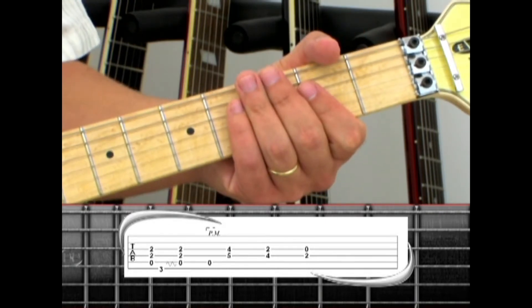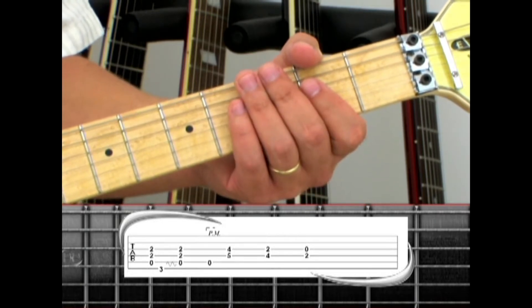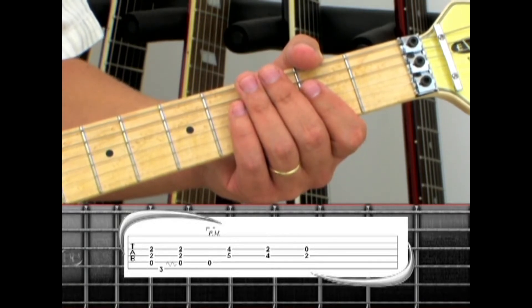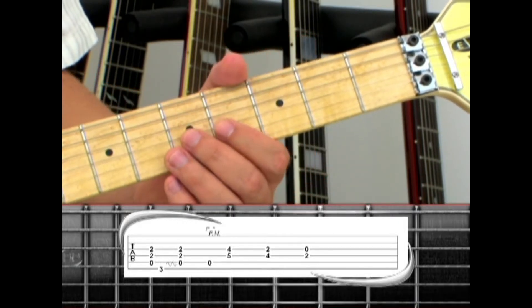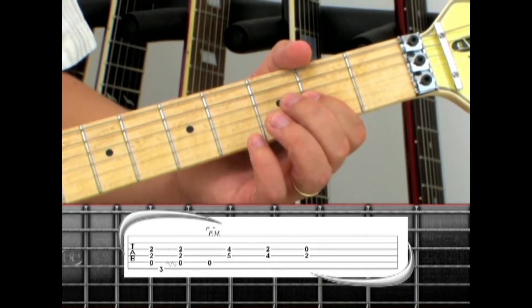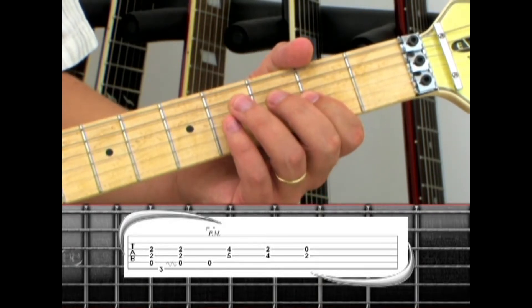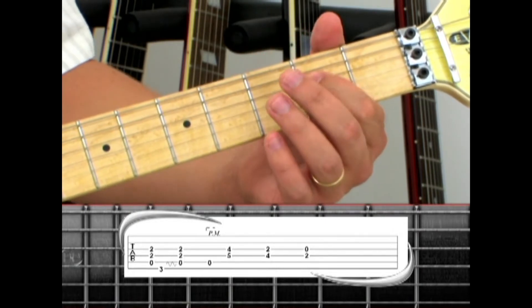Palm mute a single open 5th string A, then play a series of double notes on the 3rd and 4th string. First is the 3rd string 4 with the 4th string 5. Drop down to the 3rd string 2 with the 4th string 4. And end on the 3rd string open with the 4th string 2.